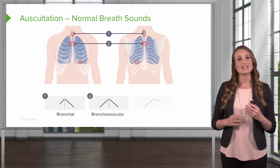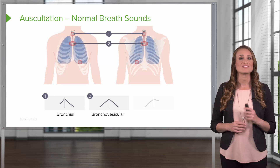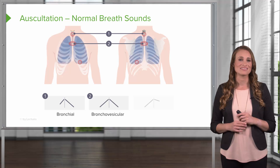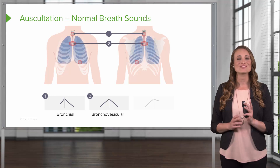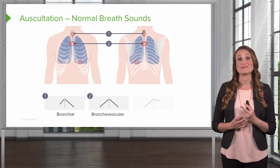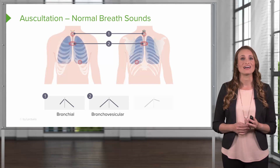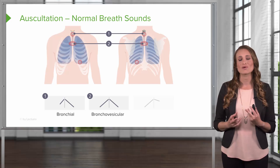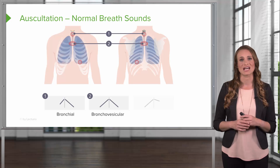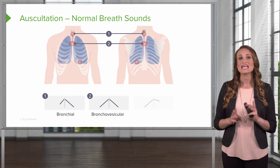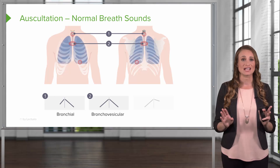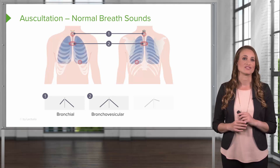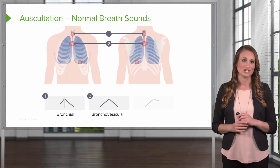As you move down the chest, the next sounds are the bronchovesicular sounds. These sounds are heard over the main bronchus region. These are the normal sounds in the mid-chest area, and they are also heard on the back between the scapula. In this phase, the inspiration and expiration are of similar duration.